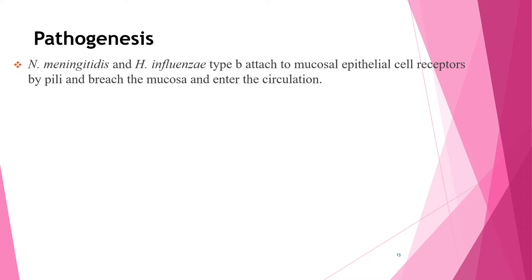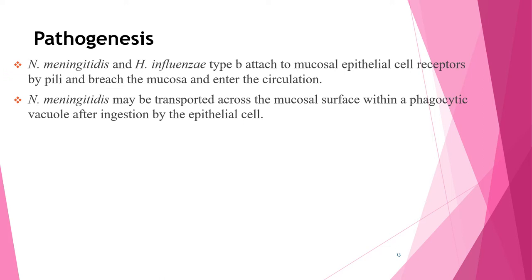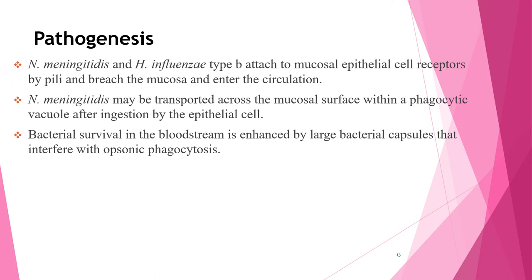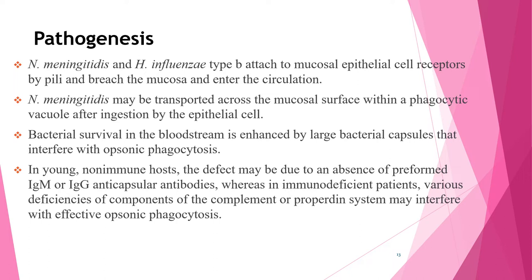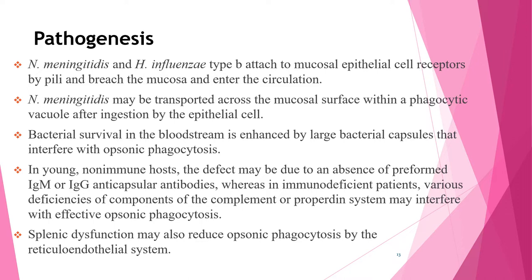Neisseria meningitidis and H. influenzae type b attach to mucosal epithelial cell receptors via pili, bridge the mucosa, and enter the circulation. Neisseria meningitidis may be transported across the mucosal surface within a phagocytic vacuole after ingestion by epithelial cells. Bacterial survival in the bloodstream is enhanced by the large bacterial capsule, which interferes with opsonophagocytosis. In a young non-immune host, this defect may be due to absence of preformed IgM or IgG anti-capsular antibodies.